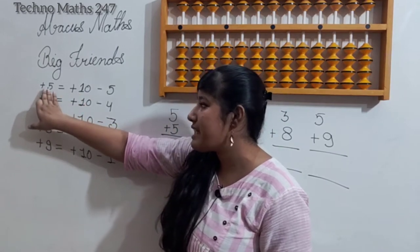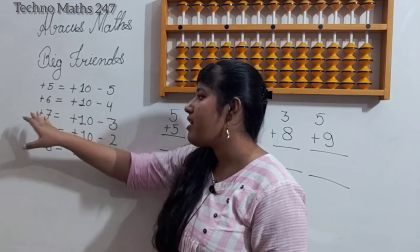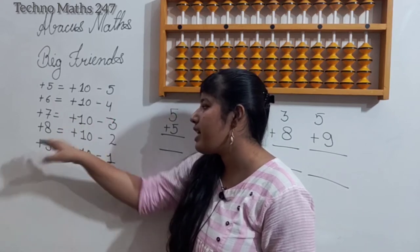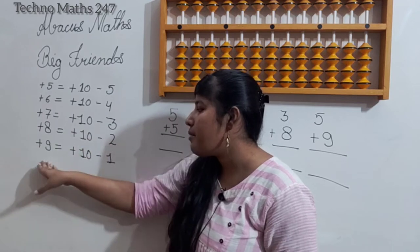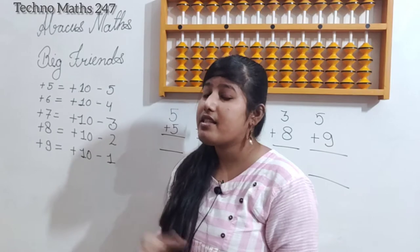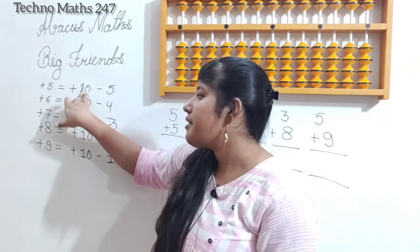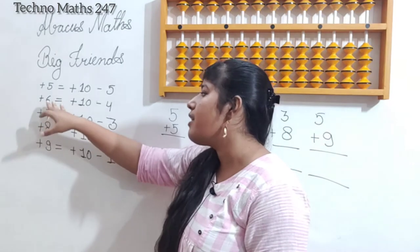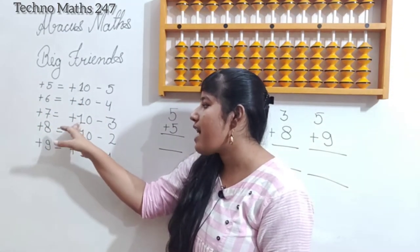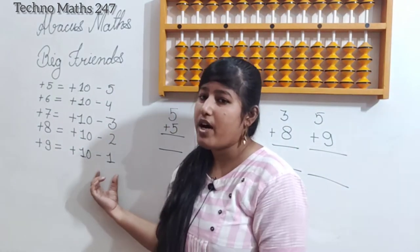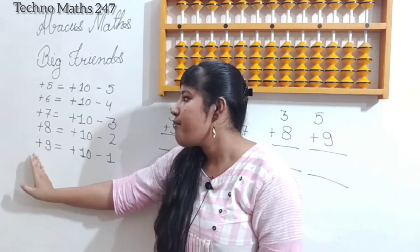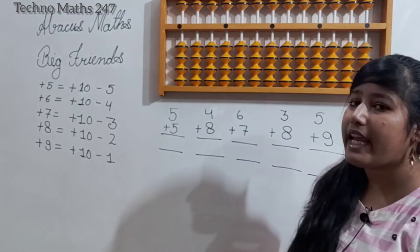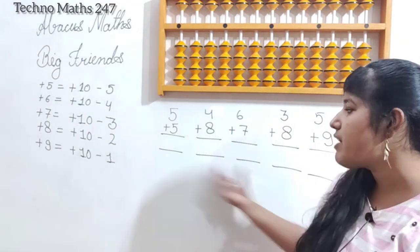The big friends are as follows: plus 5 is equal to plus 10 minus 5; plus 6 is equal to plus 10 minus 4; plus 7 is equal to plus 10 minus 3; plus 8 is equal to plus 10 minus 2; and plus 9 is equal to plus 10 minus 1. This is because when we subtract 5 from 10 we get 5, subtract 6 from 10 we get 4, 7 gives 3, 8 gives 2, and 9 gives 1. Now we will see these calculations on the abacus with the help of some easy questions.